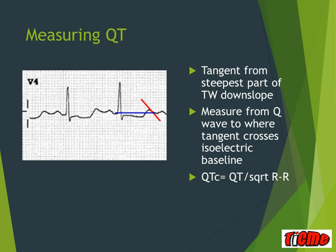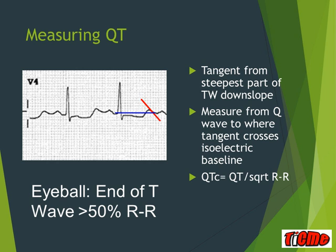If that seems too hard, you can eyeball the QT interval by looking at the end of the T wave and checking whether it is more than 50% of the R-R interval. A long QT of more than 500 milliseconds will be more than 50% of the R-R interval.